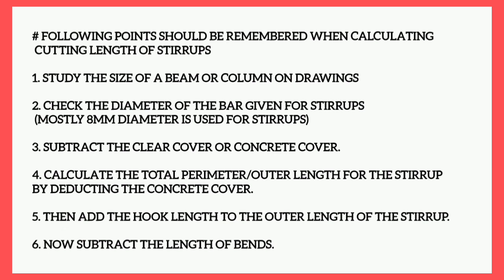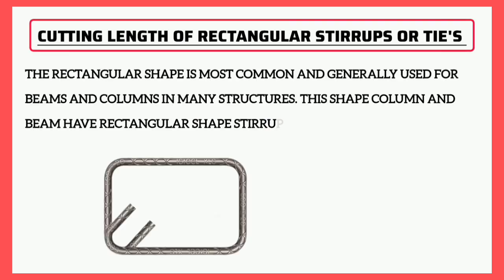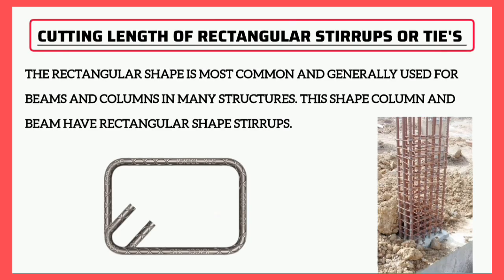Then add the hook length to the outer length of the stirrup, and subtract the length of bends. For the cutting length of a rectangular stirrup — the rectangular shape is the most common and generally used for beams and columns in many structures, where the column and beam have rectangular shaped stirrups.